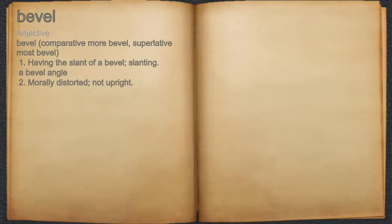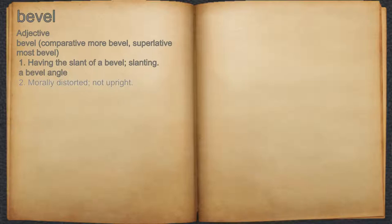Bevel. Adjective. 1. Having the slant of a bevel; slanting. For example, a bevel angle. 2. Morally distorted, not upright.